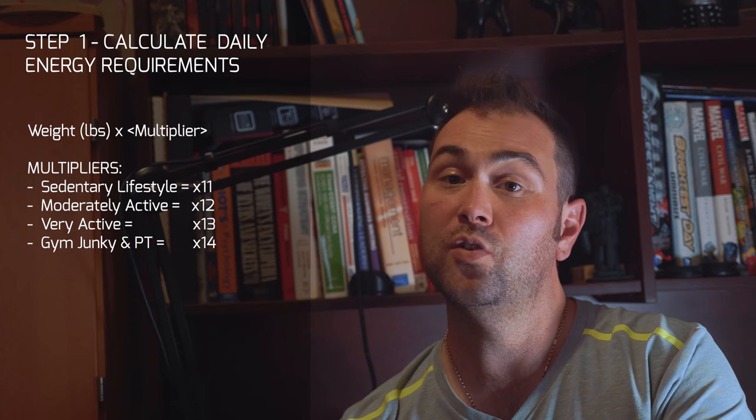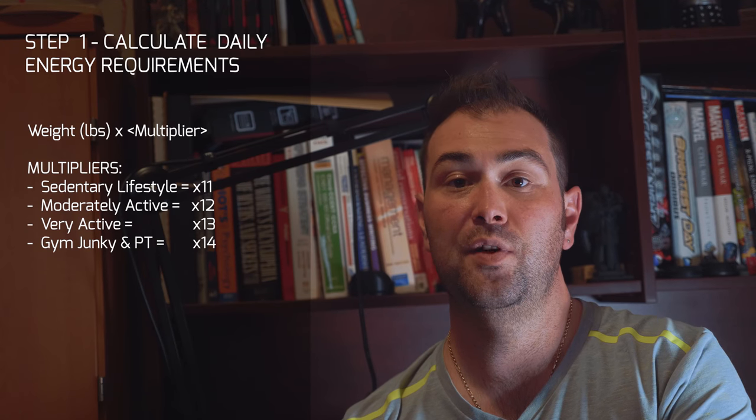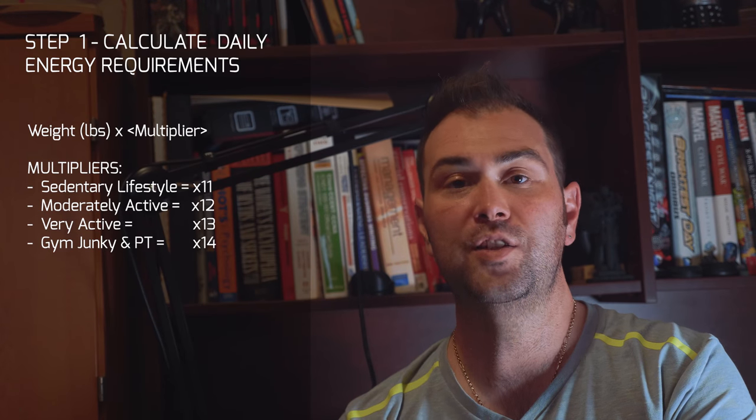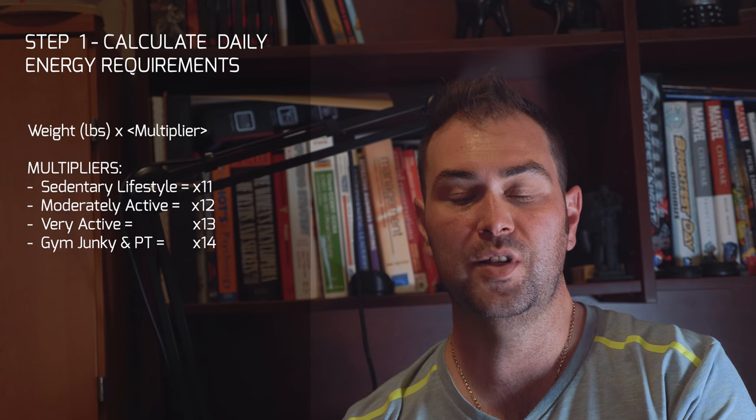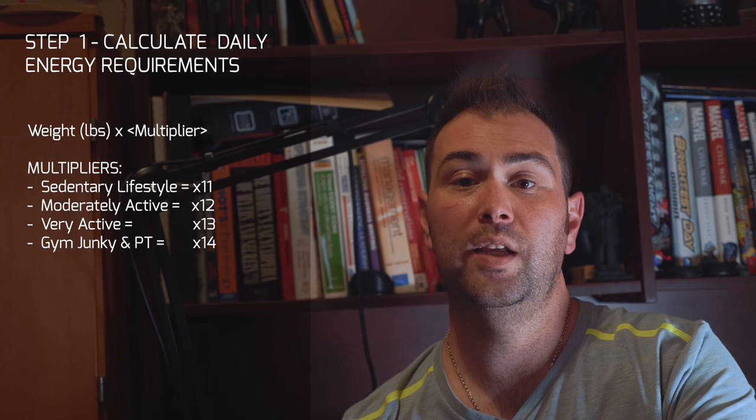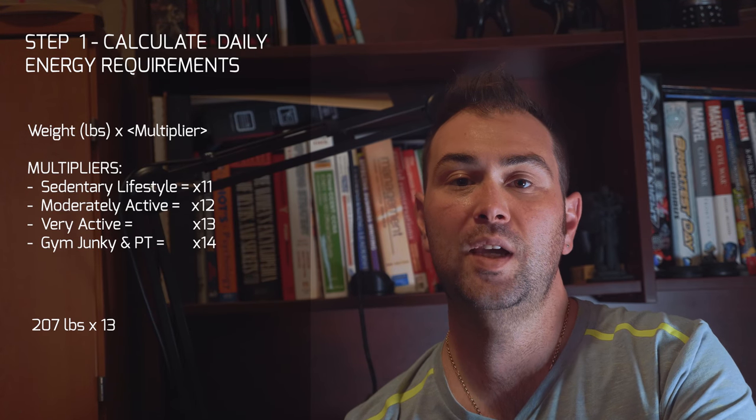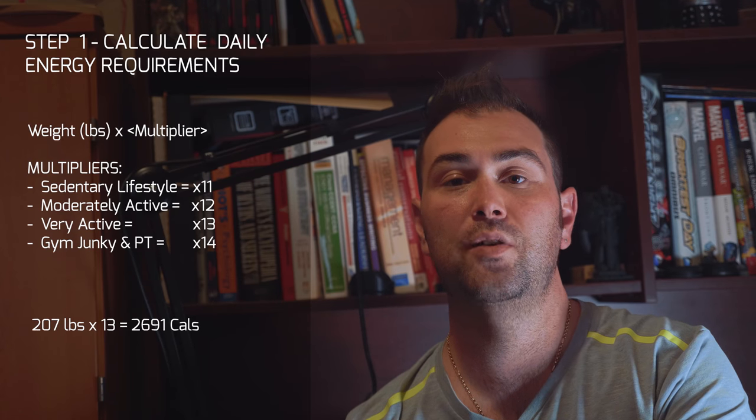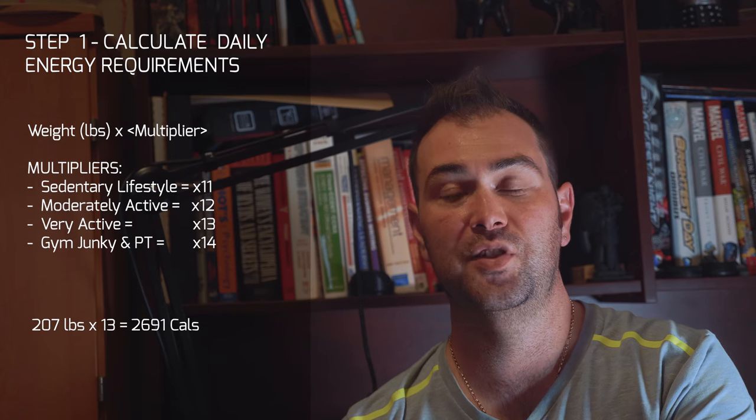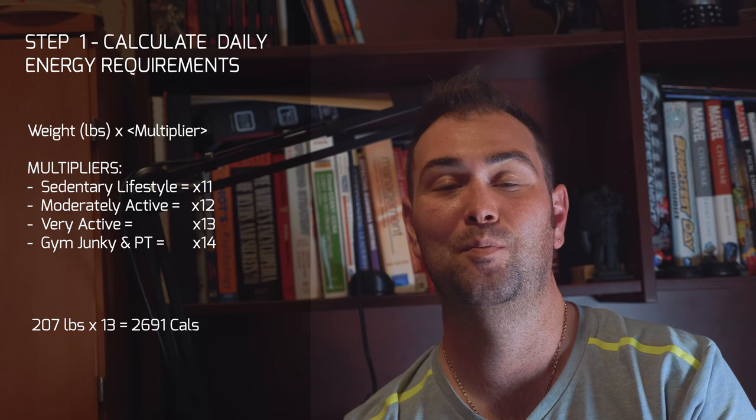If you jump on the internet and look at calculating macro targets or calculating calorie intake or energy intake, you'll generally see that people will recommend you use a multiplier of your weight in pounds, and that multiplier will range somewhere from 11 to 14. Now the program I was recently on gave me a multiplier of 13, 14, or even 15. Mileage varies, people have different opinions. In my case, for my example, when I calculated my weight, it was 207 pounds, and I multiplied by 13. That gave me a daily energy intake of 2,691 calories.